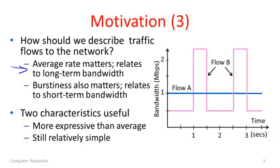To carry both of these flows, we need to allow for a megabit per second for them within the network over a longer period of time. We'll also want to describe or constrain the burstiness of the different flows.